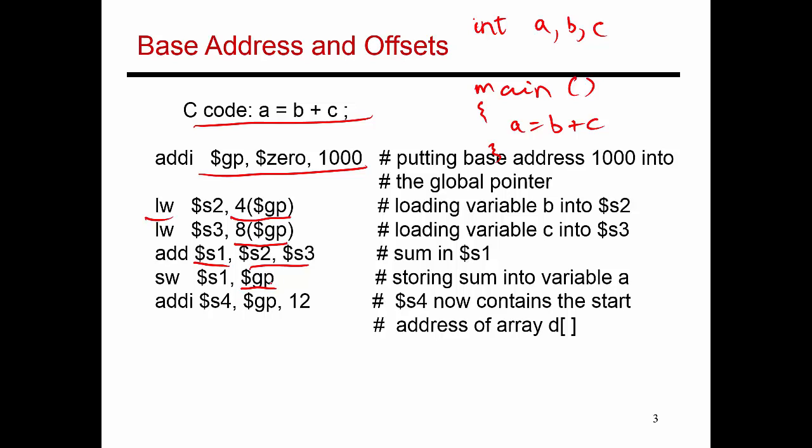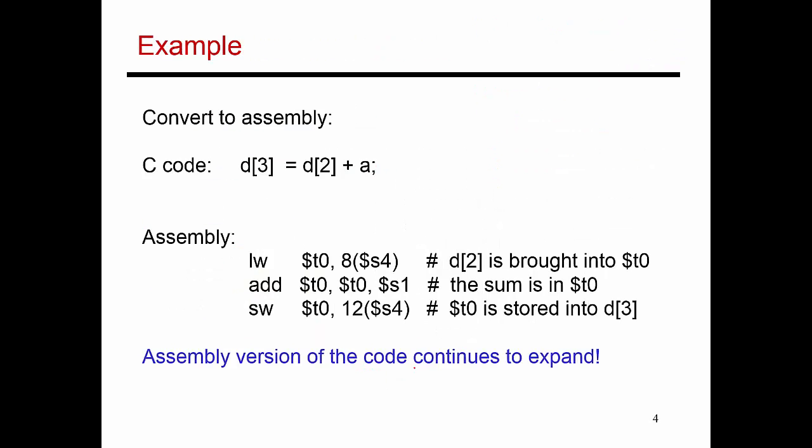What I'm also doing in this example is I'm adding 12 to the global pointer and putting it into register S4. So in this example as I'm going to build on it, you'll see that there was also a variable declared over here, which was an array of 10 values named D10. So the start of this array D is going to be at 12 away from the global pointer. And so that's why I've added 12 to the global pointer and stored it into S4. So S4 now has the address of the start of array D. So it's essentially a pointer to array element D0. It has the address of D0.